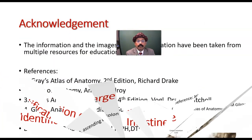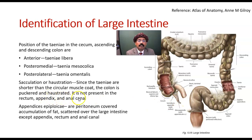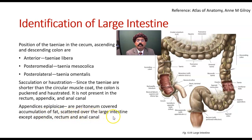Haustration is not present in the rectum and it is not present in the vermiform appendix — not present in the rectum and anal canal. Appendices epiploicae are peritoneal-covered bags of fat scattered over the large intestine, except in the appendix, rectum and anal canal.